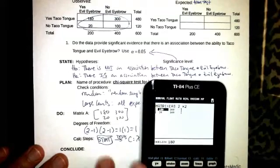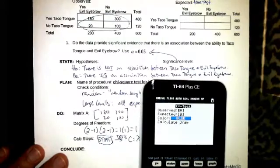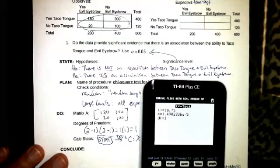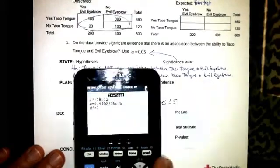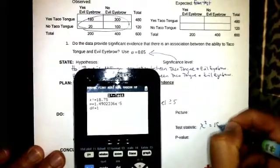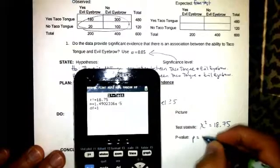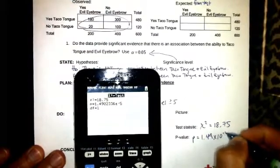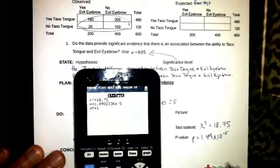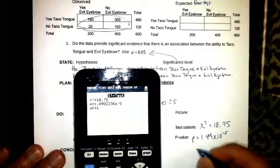Got that in there, so now I'm just going to go to my test, stat over to test, up to chi-squared, observed expected, that's good, we want to hit calculate. And we are told that our chi-squared statistic is 18.75 and our p-value is 1.49 E, or that's times 10 to the negative 5.